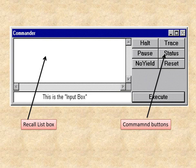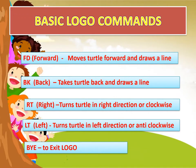There are basically four commands. FD stands for forward — it moves the turtle ahead and draws a line. BK stands for backward. RT turns the turtle in the right or clockwise direction, and LT turns the turtle in the left or anti-clockwise direction. There is also the BYE command, which is used to exit Logo — you can type it in the input box or click the cross button.